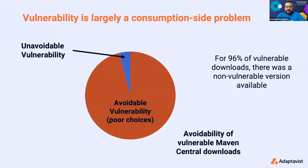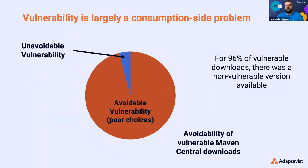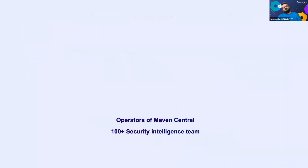The important thing we've seen is that vulnerability is largely a consumption-side problem. For about 96% of vulnerable downloads that people or organizations have downloaded, there is a non-vulnerable version available — but of course that doesn't mean it has been used. Although open source involves risk, it's still being used today heavily by organizations, and for good reasons. But there are ways to mitigate these risks.